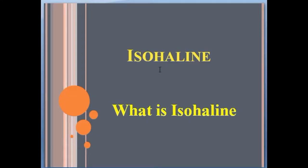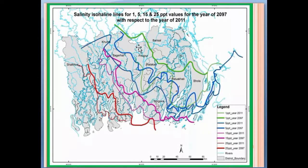Today I would like to talk about isohaline. A line drawn on a map or chart to indicate connecting points of equal salinity in the ocean is known as isohaline. In other words, it is an imaginary line connecting all parts of the ocean that have the same salinity.